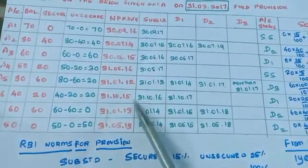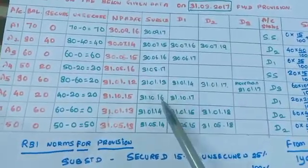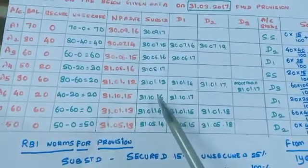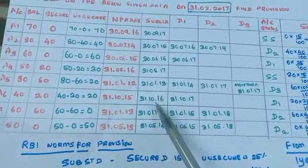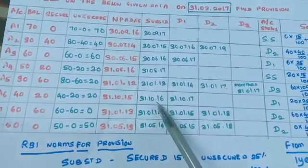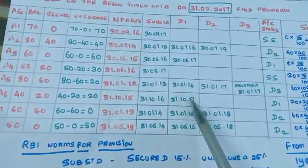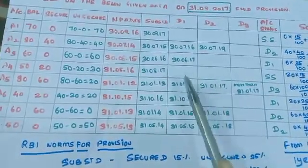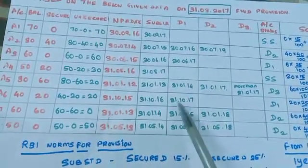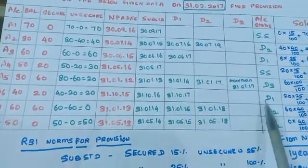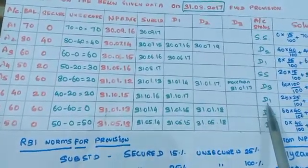The NPA date for A6 is 31-10-15. Up to 31-10-16 it falls under substandard category, and up to 31-10-17 it falls under D1. So our account on 31-3-17 is in D1 category.